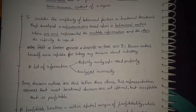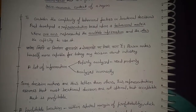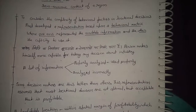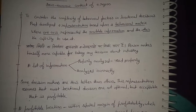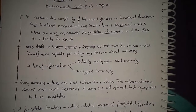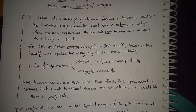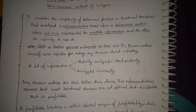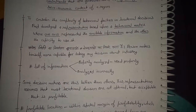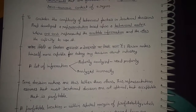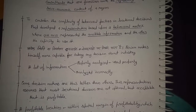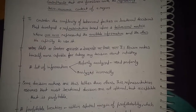To consider the complexity of behavioral factors in locational decisions, Pred developed a representation based upon a behavioral matrix where one axis represents the availability of information and the other represents the capacity to use it.